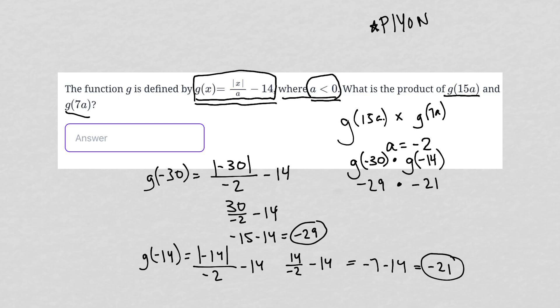So I have negative 29 times negative 21. All that's left to do is to multiply these two numbers together, negative 29 times negative 21. I go to my calculator, and what I get is that equals 609. So our answer here is positive 609.